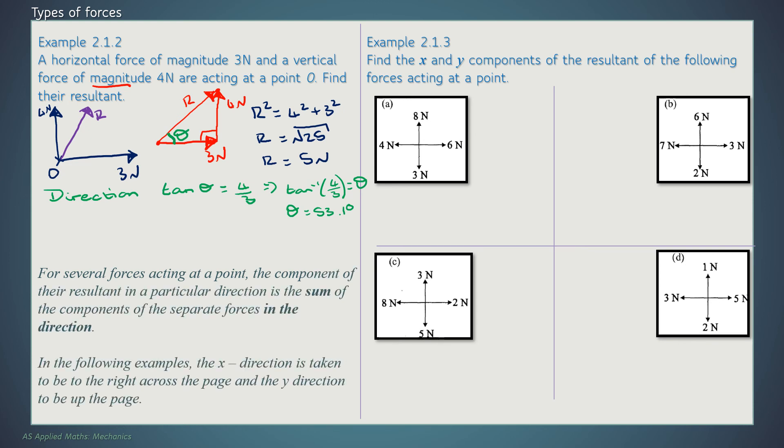Moving on, if we've got several forces acting at a point, the component of their resultant in a particular direction is the sum of the components of the separate forces in that direction. What we're going to be looking at here is the X direction going to the right and the Y direction going up. We're going to be looking at the components of X and Y. This is really important and it's worth spending some time on. I'm going to split it up in the X direction. So I've got 6 minus 4, which is 2. And the 6 is bigger than the 4, so that's going to be going to the right. In the Y direction, I've got 8 minus 3, which is 5. And the 8 is bigger than 3, so that's going to be going up.